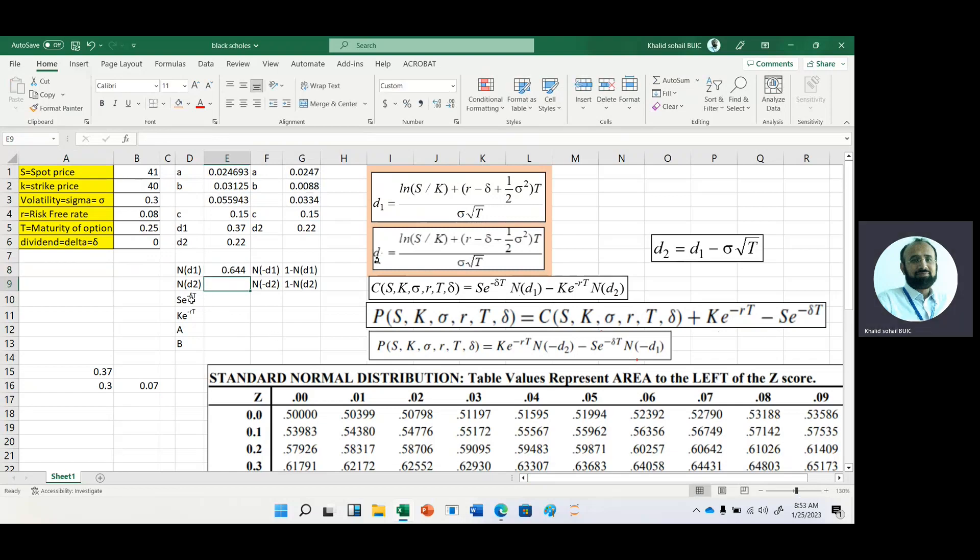For the second value, D2 is 0.22. Again break this 0.22 into two parts: 0.2 and 0.02. Here we have 0.58706. When we use Excel, if you want to calculate, we can get this value.